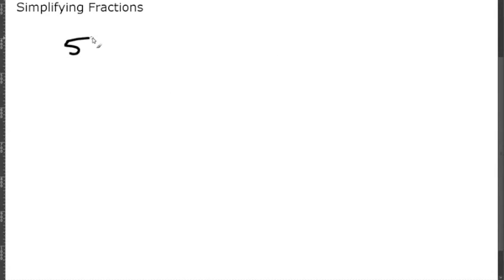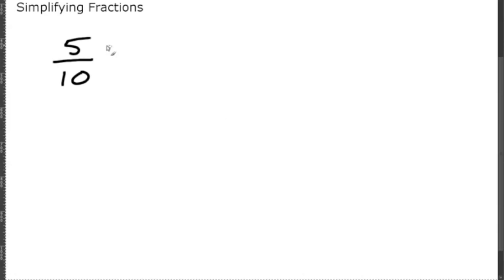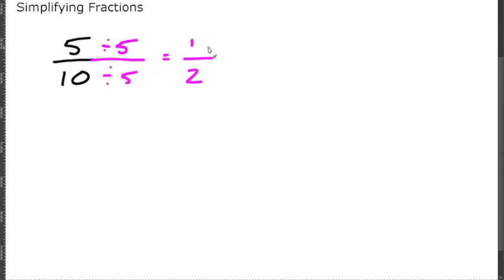Say that we have five-tenths and we need to simplify this. We don't need to worry about dividing by one because if you divide five and ten both by one, they're going to be the same thing. Can we divide both by two? No, because two does not go into five. How about three? Nope. Four? No, four does not go into five or ten either. How about five? That should work because five divided by five equals one, and ten divided by five equals two. So, five-tenths is equal to one-half.